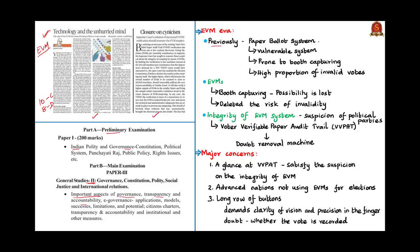Previously the paper ballot system was vulnerable in many ways — it was prone to booth capturing and there was a high proportion of invalid votes because many found it difficult to put the stamp in the allocated space. But in the era of EVMs, booth capturing has lost its possibility and value, and it deleted the risk of invalidity of votes. However, political parties of India seem to have a continuous suspicion on the integrity of the EVM system. As a response to this suspicion, the Election Commission of India linked the EVMs to the VVPAT — the Voter Verified Paper Audit Trail — which the author refers to as the doubt removal machine.